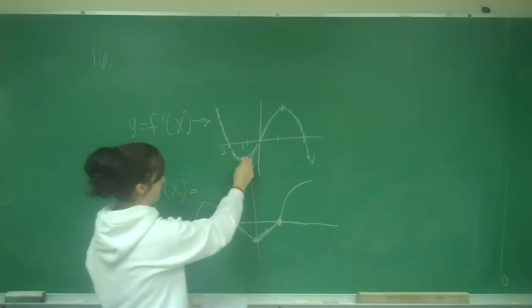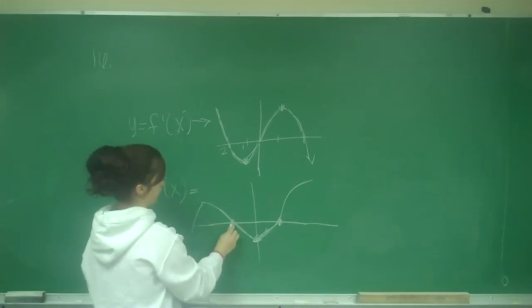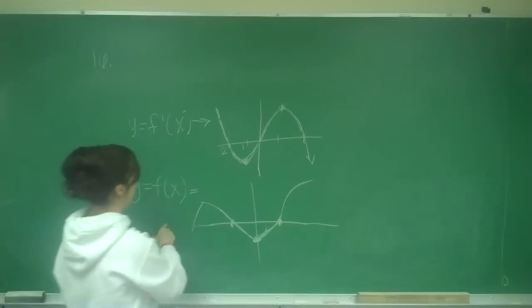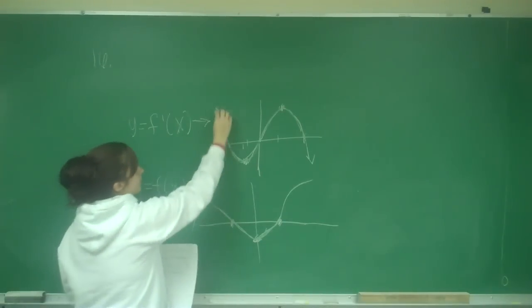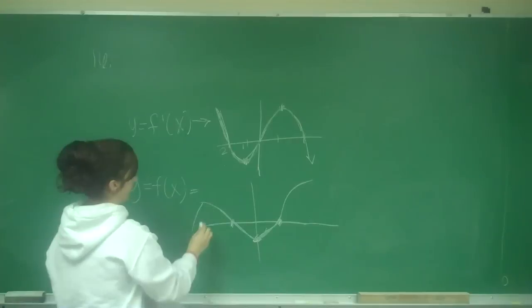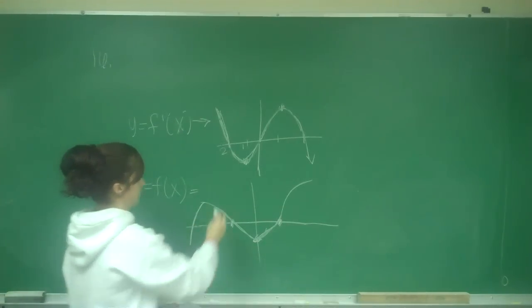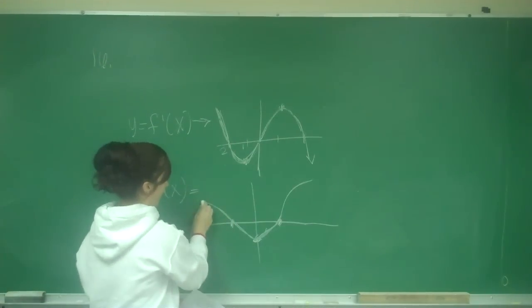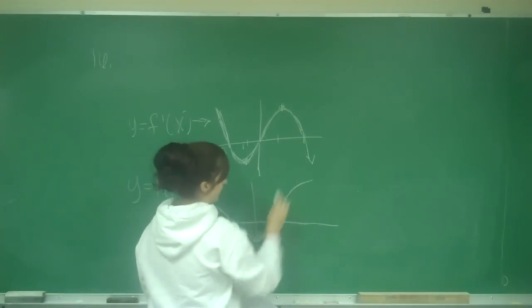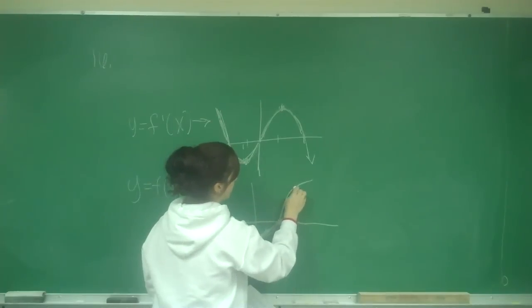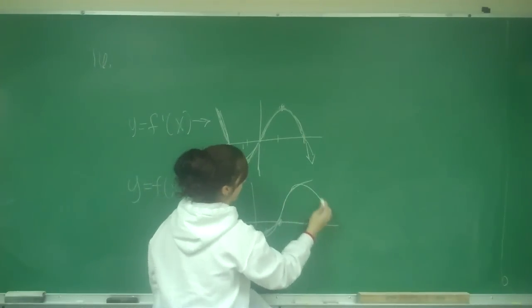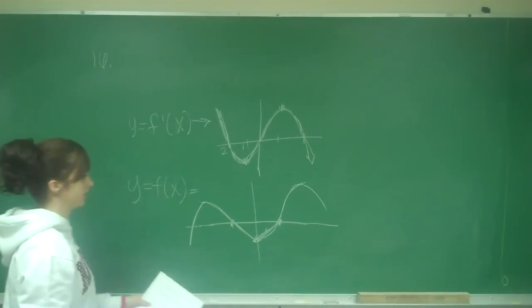Whenever I have a min or max, that's when it crosses the x-axis in my position. When the derivative is above the x-axis, I have a positive slope in my position function. When it's below the x-axis, I have a negative slope. Above the x-axis, it goes up because I have a positive slope, and below, it goes back down because I have a negative slope.